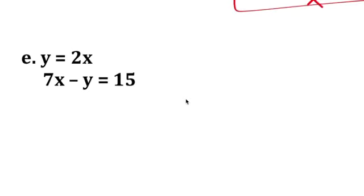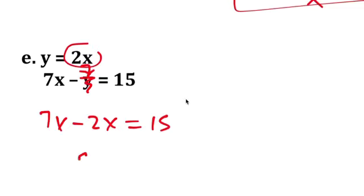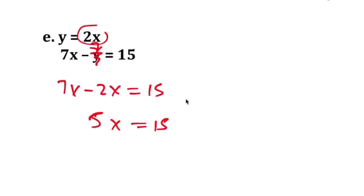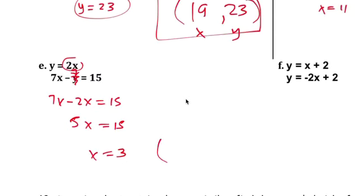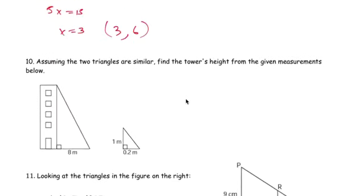Here you would use substitution. I would substitute this into here where y is. So 7x minus 2x equals to 15. You got 5x equals to 15. Divide by 5, x is 3. Well, if x is 3, y is, y equals 2x. If x is 3, y is 6. And use substitution there.